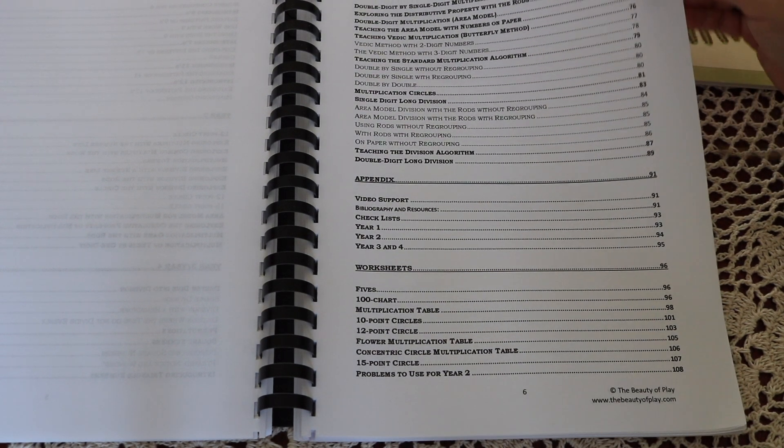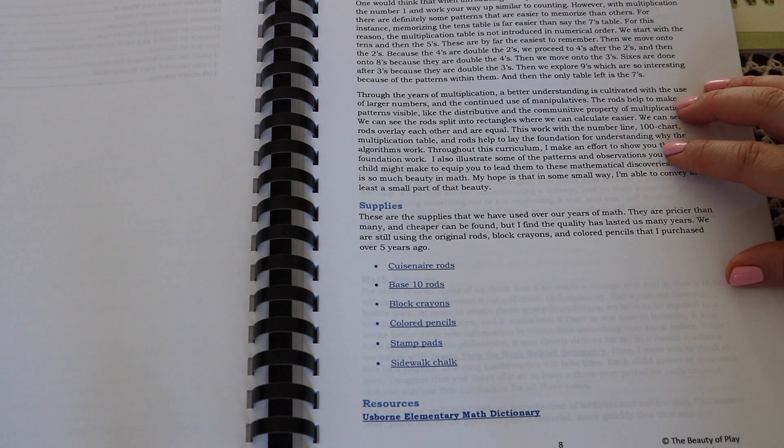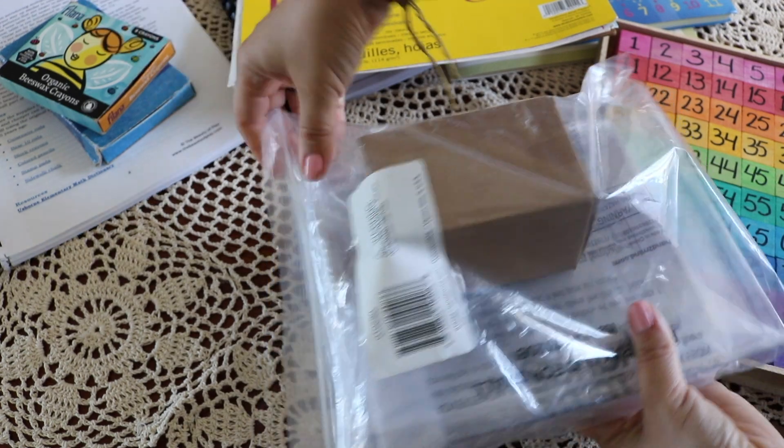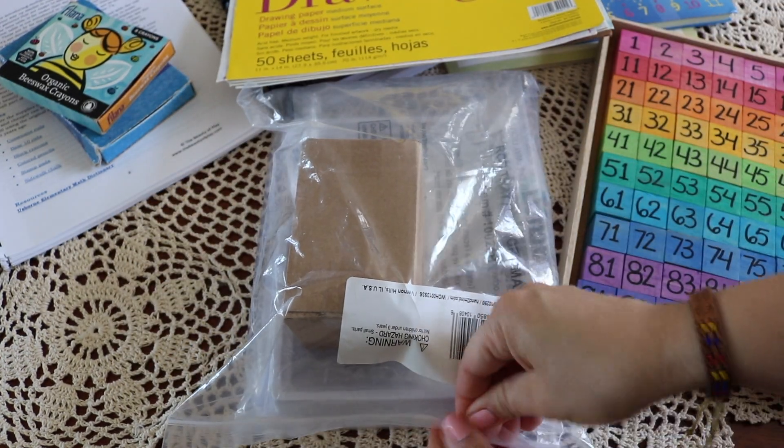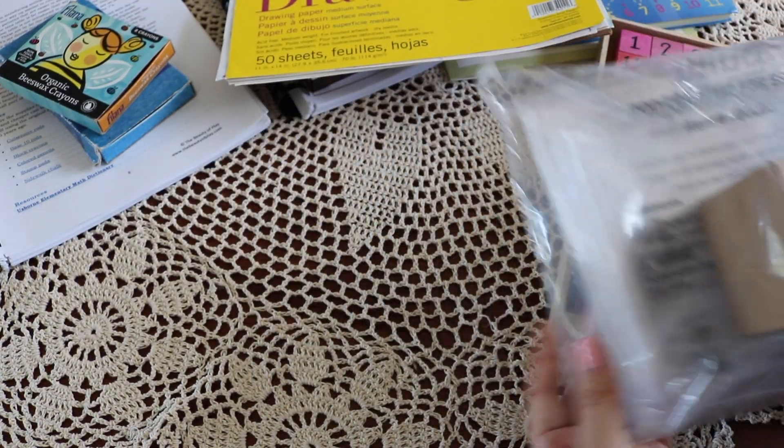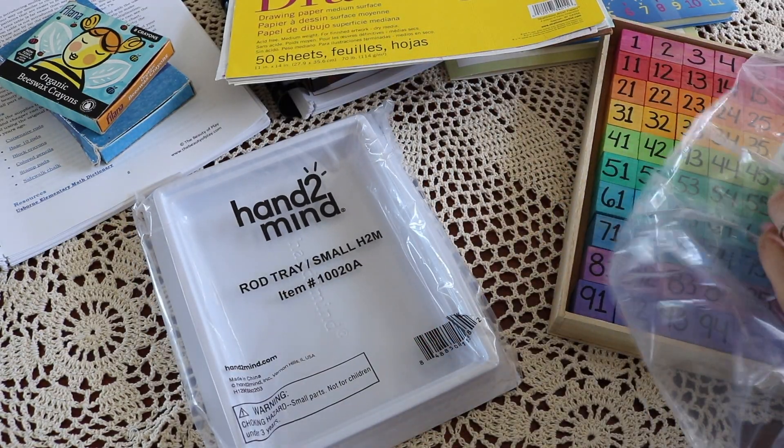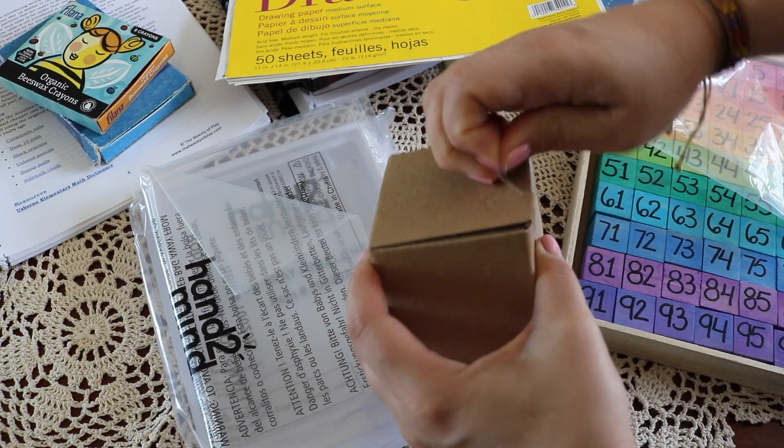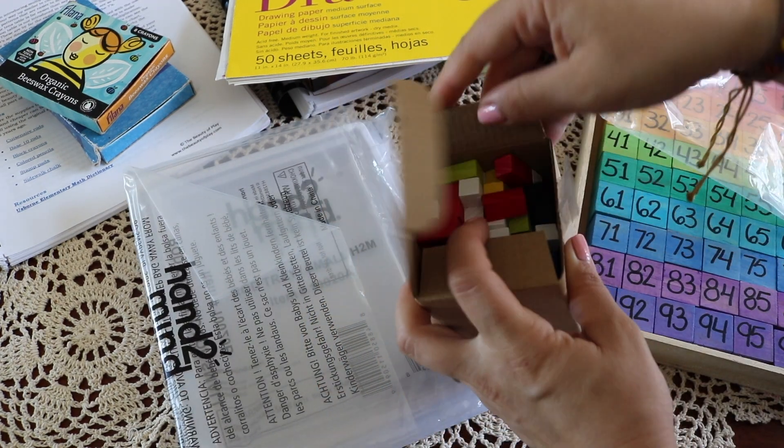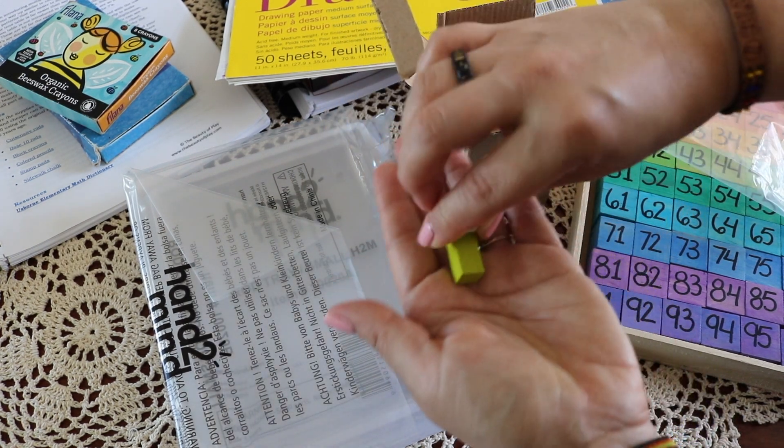The supplies that are recommended to pair with this resource: Cuisenaire rods. These rods are a collection of rectangular rods of 10 colors, each color corresponding to a different length. This material provides endless opportunities to introduce, investigate, and reinforce key math topics such as addition, subtraction, counting, place value, geometry, measurement, multiplication, and division.